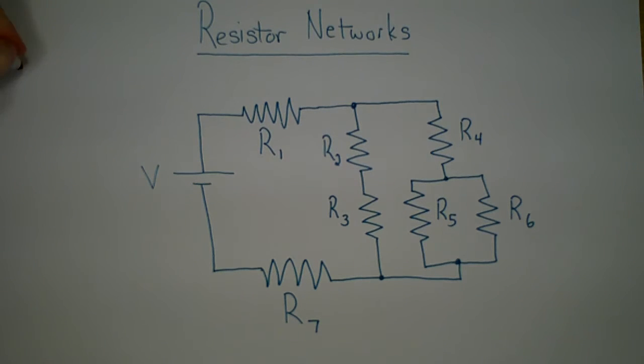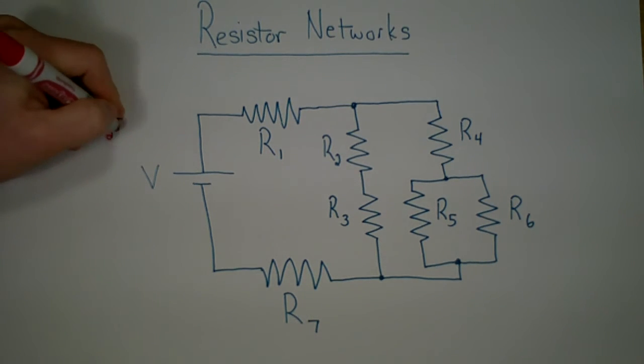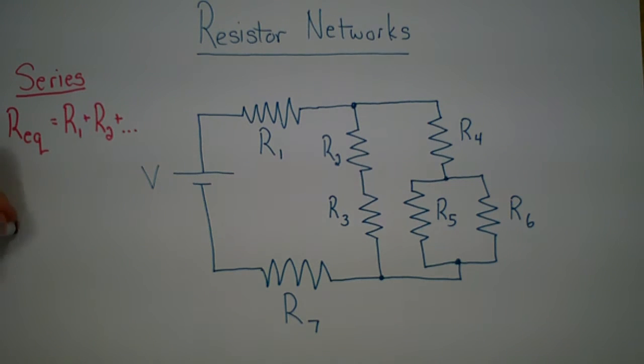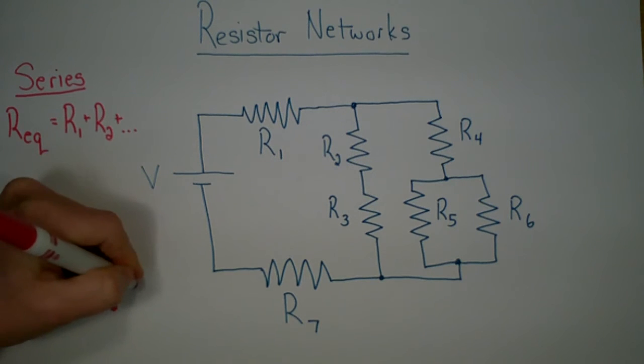When we consider resistor networks, we want to simplify things using either series combinations, where REQ equals R1 plus R2 plus however many resistors we have, or a parallel combination where 1 over REQ equals 1 over R1 plus 1 over R2, and so on.